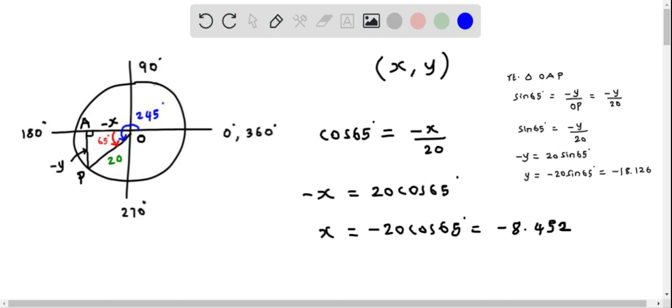So we found the values of X and Y as negative 8.452 for X and for Y we got the value as negative 18.126. Therefore the coordinate (X, Y) of the point P is - we put the X first - negative 8.452 comma negative 18.126. This is the coordinate of the given point.